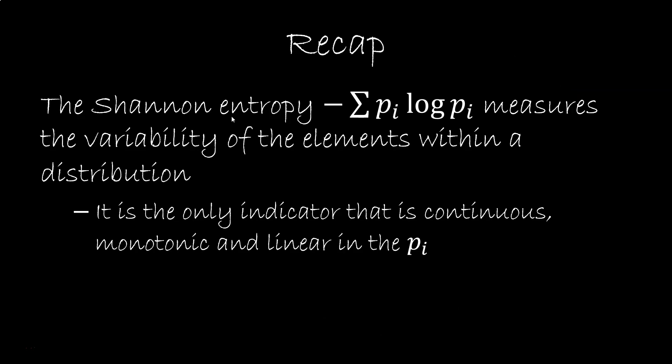So the Shannon entropy measures the variability of the elements within a distribution, no matter what the distribution, statistical, probability, credence, and no matter what the distribution is applied to. It's a very general tool. It is the only indicator of variability that is continuous, monotonic, and linear. So it's not some arbitrary expression, it's the only one we can have.